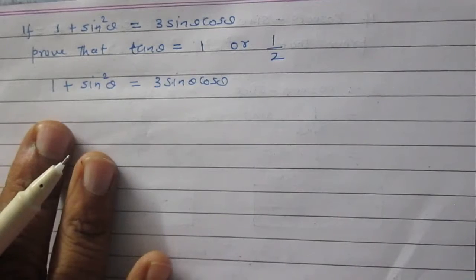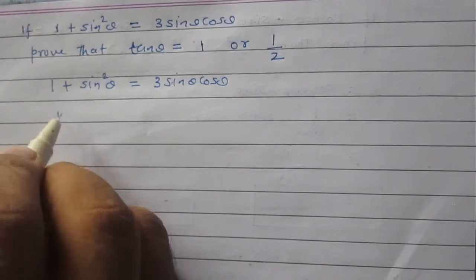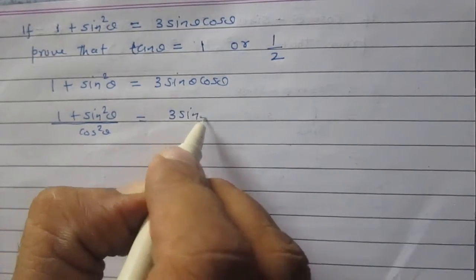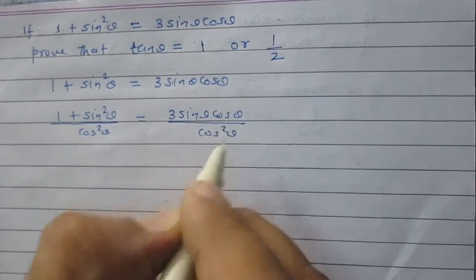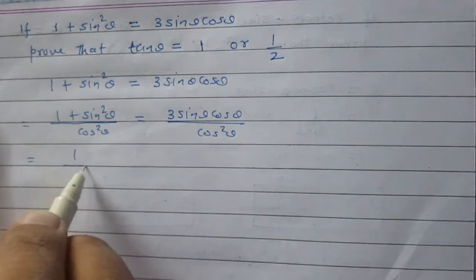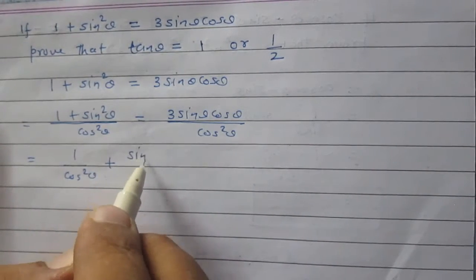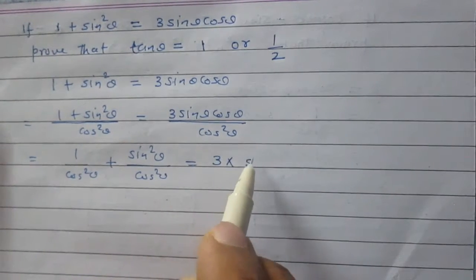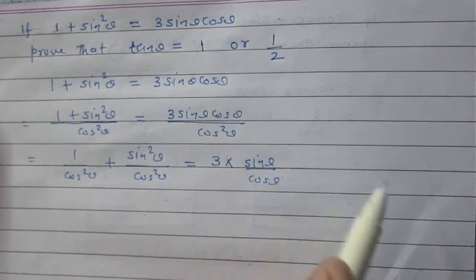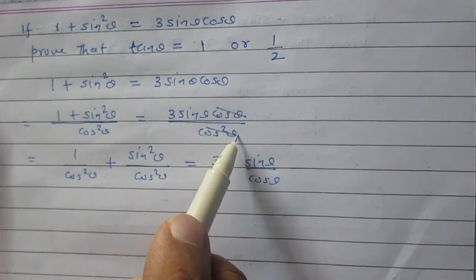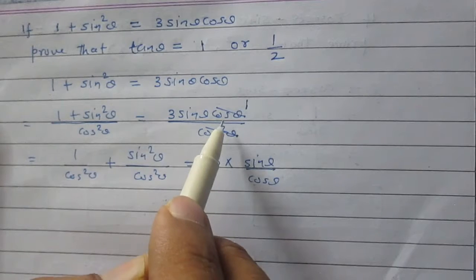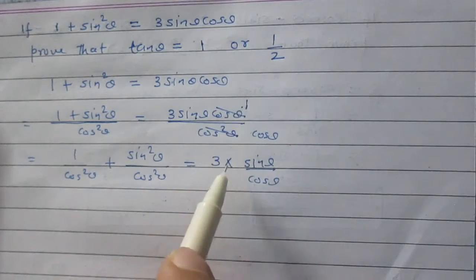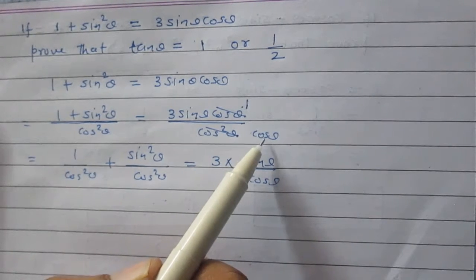Let us divide the left hand side and right hand side both by cos squared theta. So we will get 1 plus sin squared theta divided by cos squared theta, equal to 3 sin theta cos theta divided by cos squared theta. We can write it as 1 upon cos squared theta plus sin squared theta upon cos squared theta, equal to 3 sin theta upon cos theta, because one cos theta cancels from numerator and denominator.